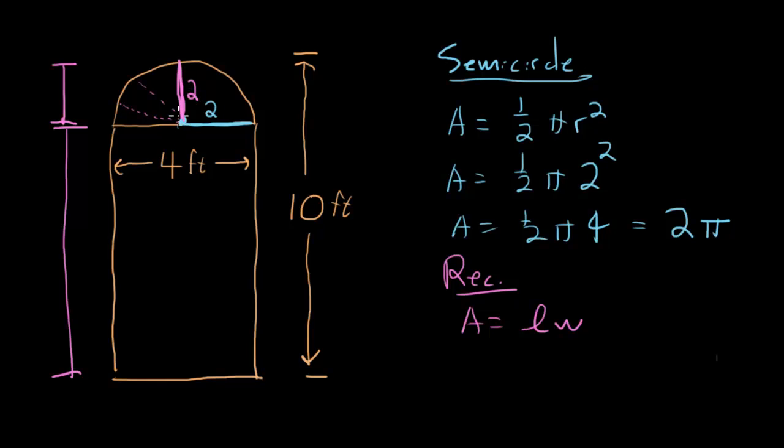So we know the circle part is two high. That means this distance, which we wanted, is two.